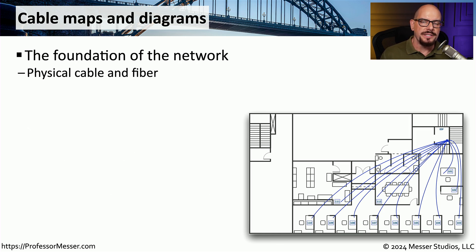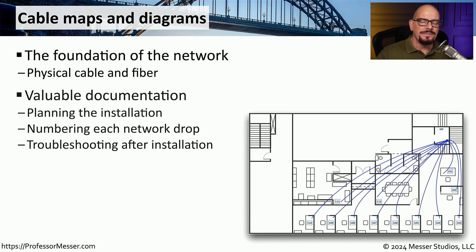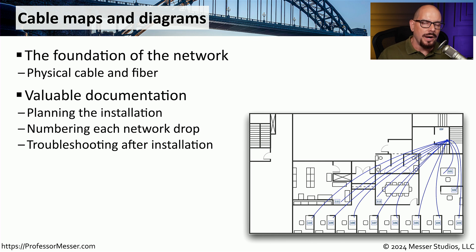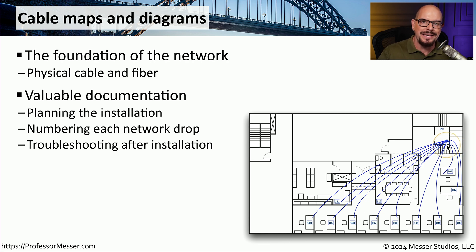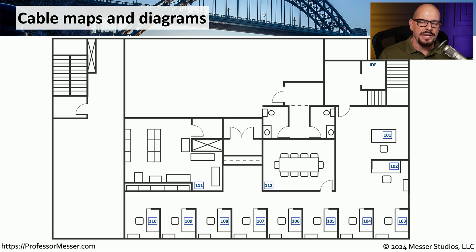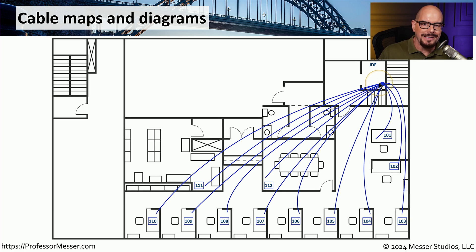Another useful physical piece of documentation is the cable map for your office. This would allow you to see a view of the office and exactly where the wires are installed in that facility. You often see one of these diagrams in the IDF or MDF — it's usually on the wall so that you can understand where these wires are going when they leave that closet. This shows you where the physical wires are running either under the floor or above the ceiling, and each drop is numbered. This allows you to correlate the network drops at each individual desk with the network drops connected to the patch panels inside of the wiring closet. These are useful not just during installation but also when troubleshooting — you can track back exactly where a wire was run and correlate that back with problems you might be having with that particular network drop.